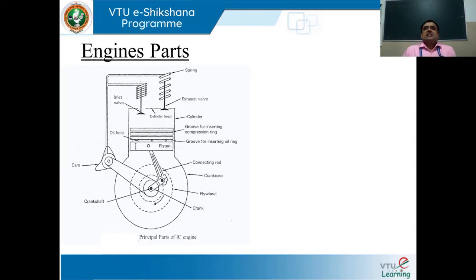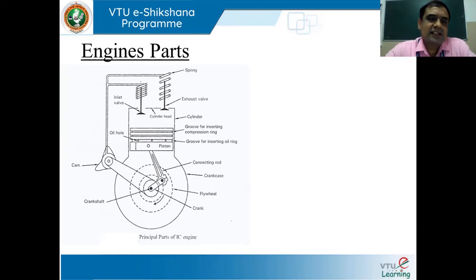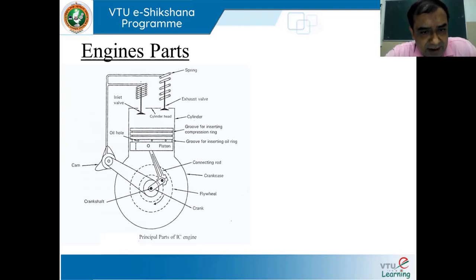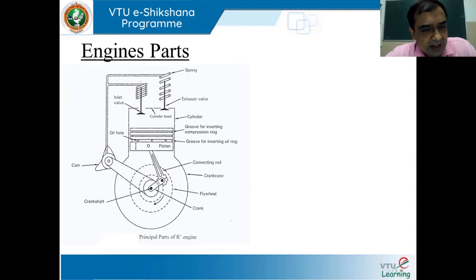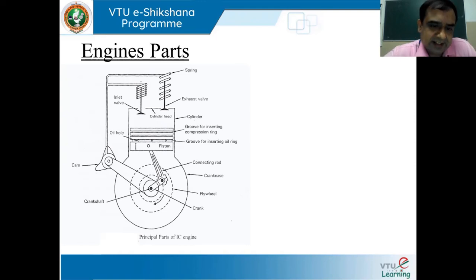When we start describing the principle of operation or mechanism of an engine, there is no point in proceeding without clarity on engine parts. We should be aware of the various components used in a particular engine. This slide clearly mentions the schematic of engine parts. We should be well acclimatized with the various parts of an engine. In this schematic, at the top we find springs, next mechanically operated valves — namely inlet and exhaust valves — and then the engine cylinder, which is very prominent.